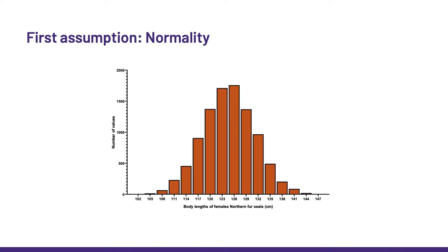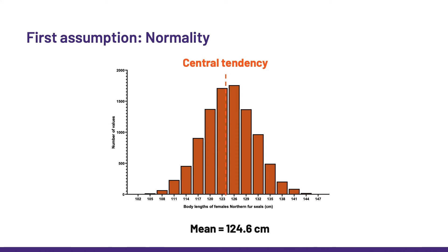The first assumption is normality. We don't want our data to be normal because it looks pretty — we want them to be normal because parametric tests will compare means. So they will rely on the means to be faithful summaries of data, which is the case in a normal distribution. Normal data are symmetrical and tend to cluster around the center of their distribution, hence the expression central tendency, and the center is the mean. It is really important to make sure that our data are behaving normally, as if they depart from normality, the mean is no longer a faithful summary.